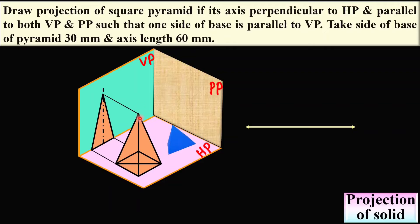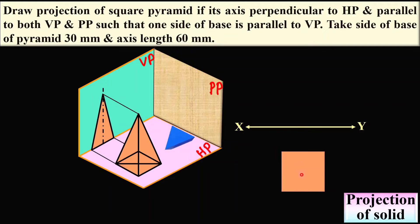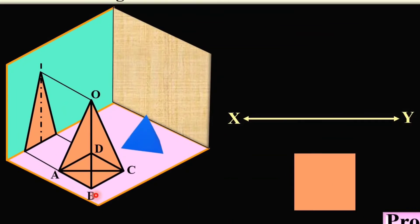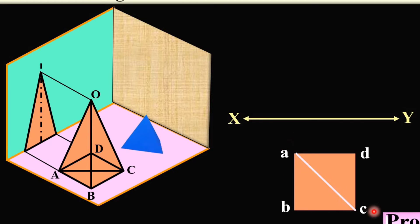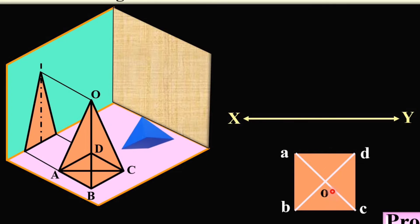For this particular situation you have to draw the XY line, that is your reference line. Since the axis is perpendicular to HP, you can see the base as a true shape in the top view, and hence you should start with the top view. Here you can see the top view will be the square. Simply draw the square — this distance you can take randomly since it is not mentioned. Give the name: here I have considered this as ABCD. Keep in mind for the top view the corner points must be with small letters and without dash. To locate the O point, join these two diagonal points so that you can find the center position — that will be your O point, that means the apex point.